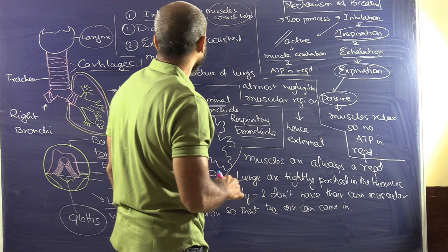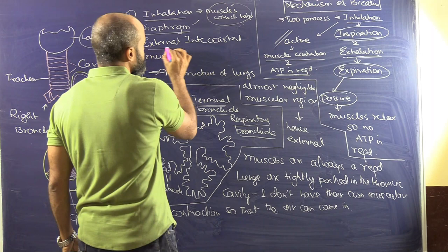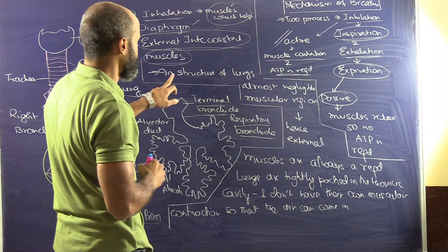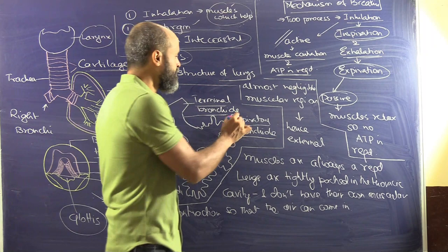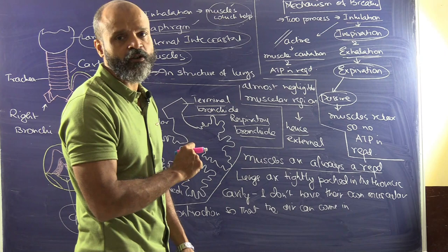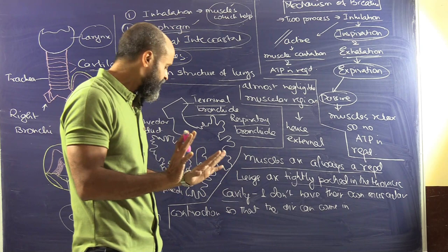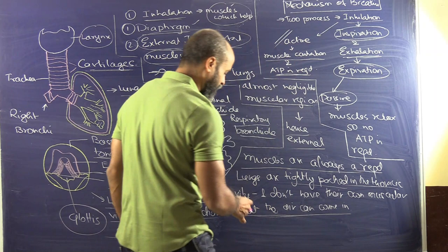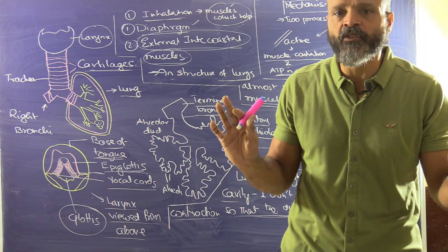What muscles help in inhalation? We have the diaphragm and the external intercostal muscles. In the structure of the lungs there is almost negligible muscle present — contrary to the heart, which is highly muscular. So external muscles are always required. The lungs are tightly packed in the thoracic cavity and do not have their own muscular structure, so we need the external intercostal muscles and the diaphragm for contraction and expansion of the lungs.